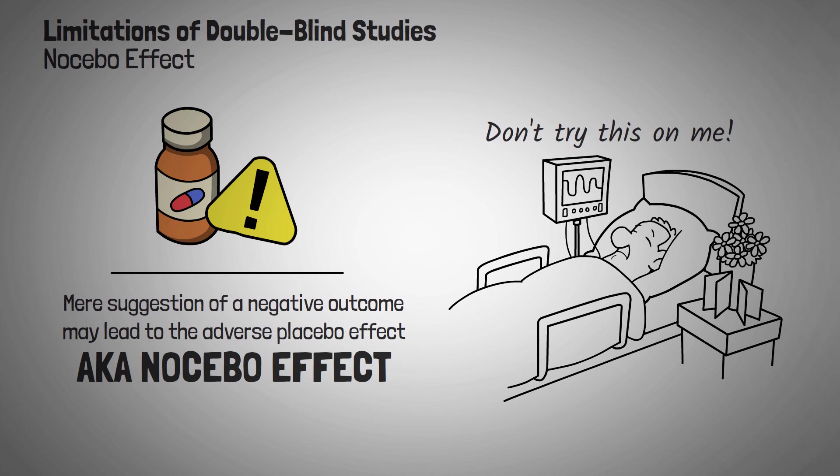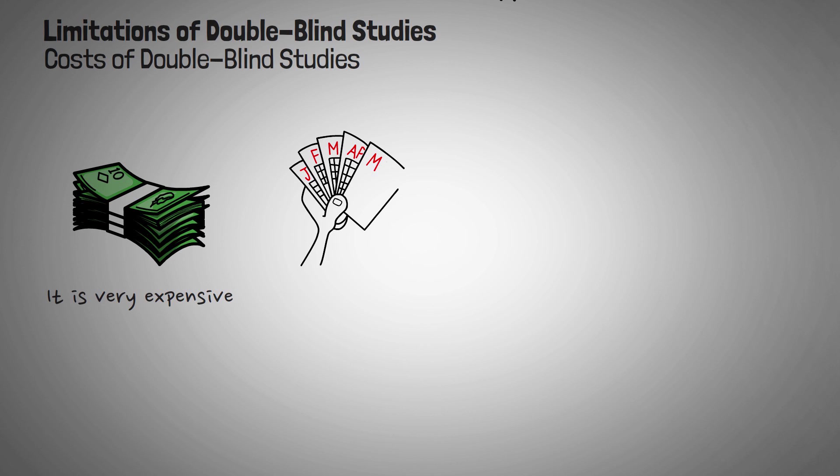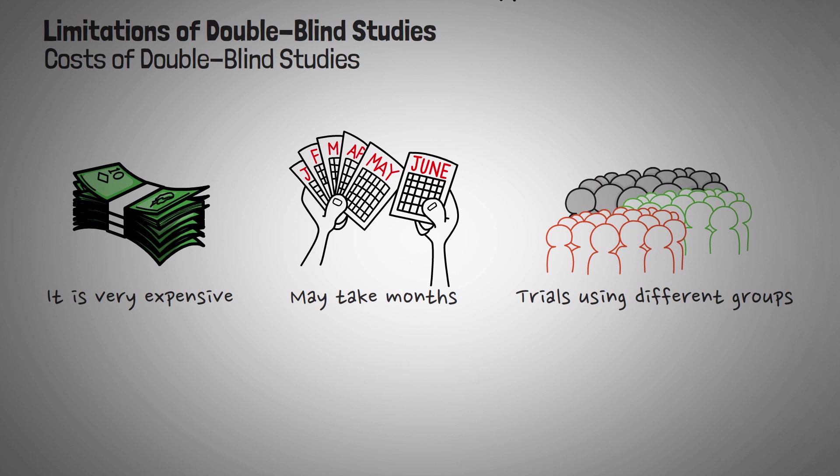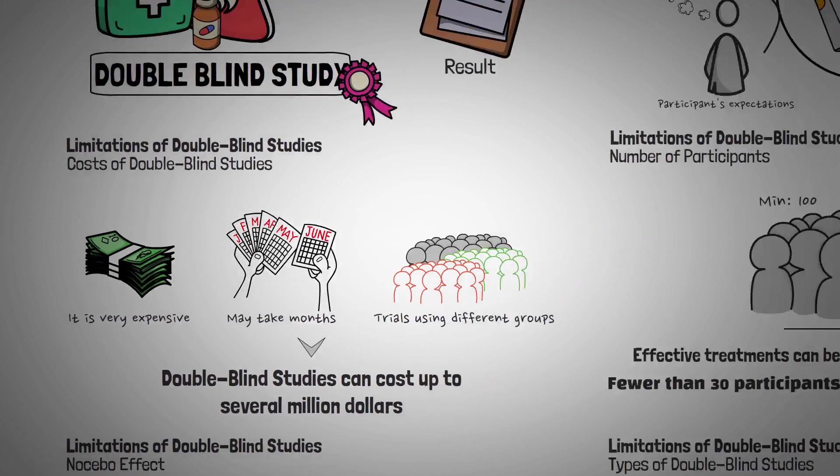In research, the use of a placebo is generally acceptable only in situations where there is no proven acceptable treatment for the condition in case. For ethical reasons, participants must always be informed of the possibility that they will be given a placebo. As a consequence, some participants may think that they feel the effects of a placebo, which makes them believe that they are in the treatment group. The high positive expectancy is a disadvantage that can lead to a misinterpretation of the results. Another downside is the cost of double-blind studies. Double-blind procedures are very expensive. They may take several months to complete and lots of money, as experiments often require numerous trials using different groups in order to collect enough data. As a result, double-blind studies can cost up to several million dollars, depending on the amount of work required and the industry in which the product is being tested.